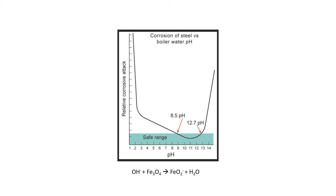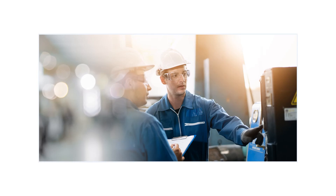Boiler water is generally considered corrosive to metal when the pH is outside the range of 8.5 to 12.7. This is clearly indicated by a curve on a graph with pH on the x-axis and relative corrosive attack on the y-axis. Generally, a typical pH range for boiler water in a high-pressure steam boiler is about 10 to 11.